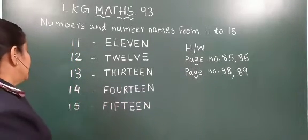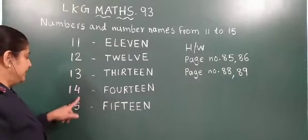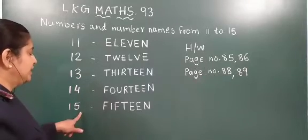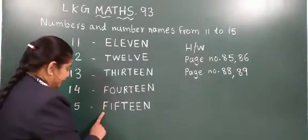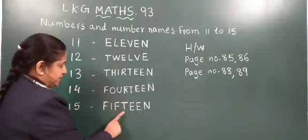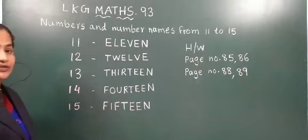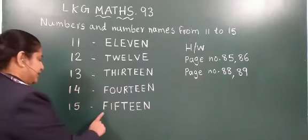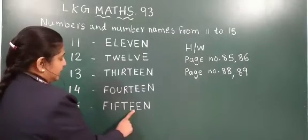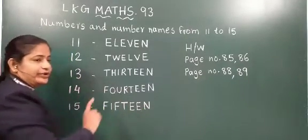Now after fourteen the number is fifteen. Fourteen ke baad konsa number ae ga? One five — fifteen. Now spellings: F, I, F, T, E, E, N. We will learn once more: F, I, F, T, E, E, N. Fifteen.